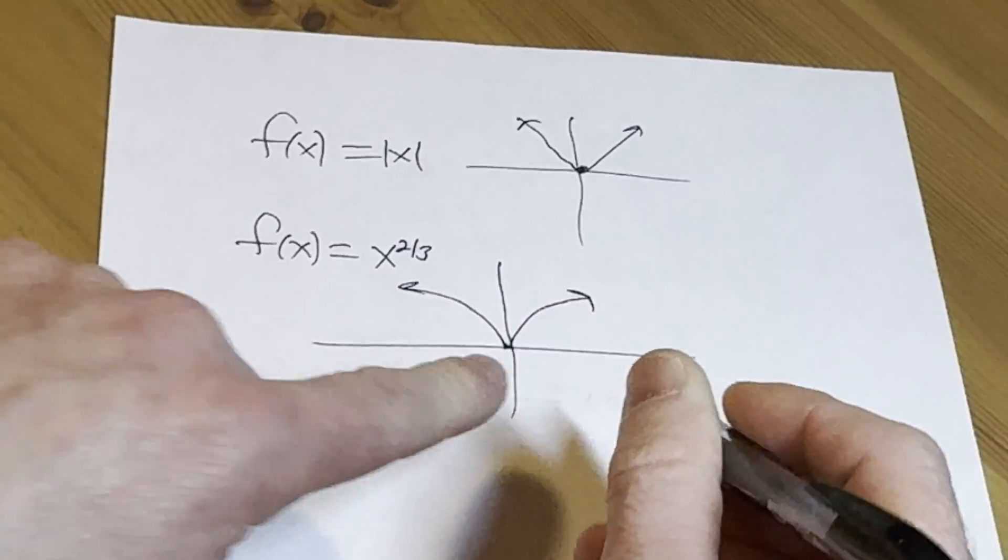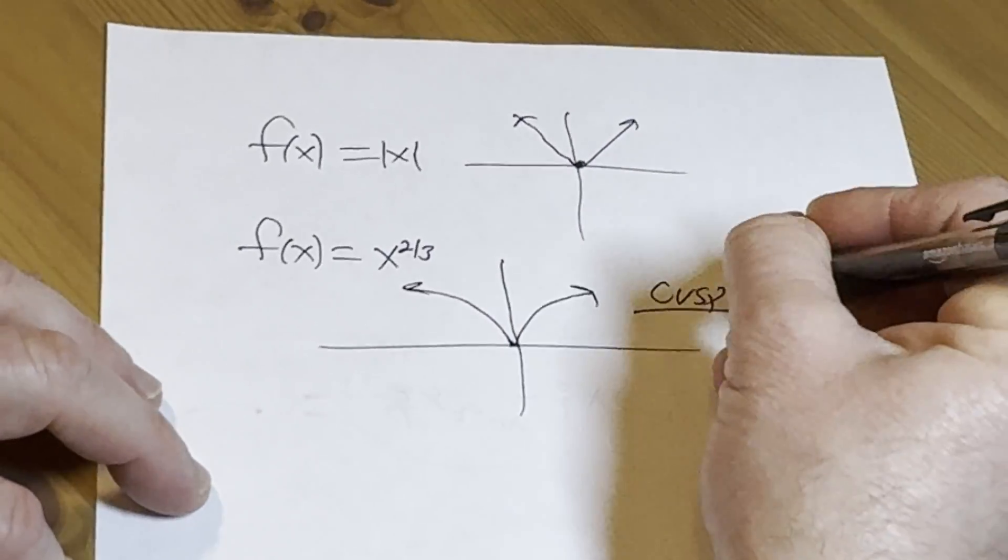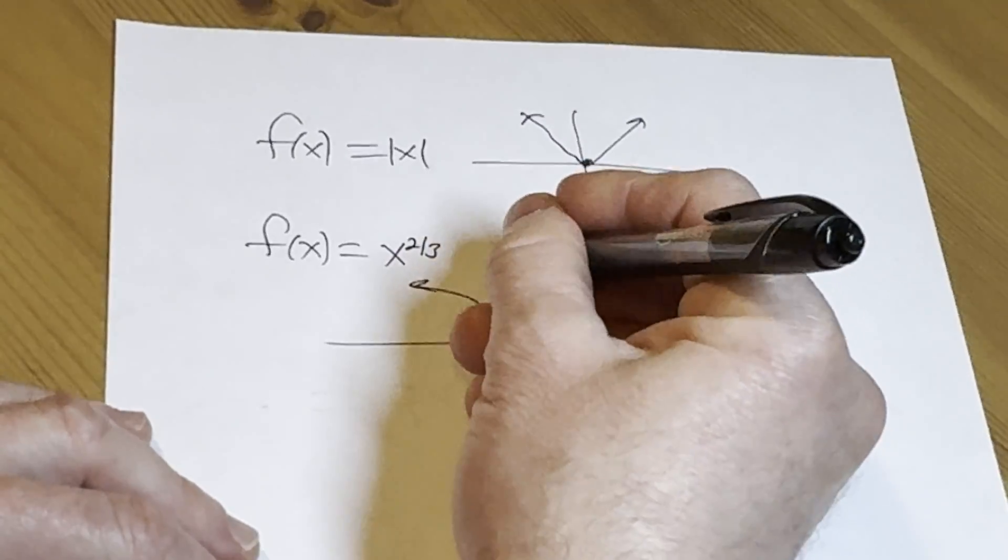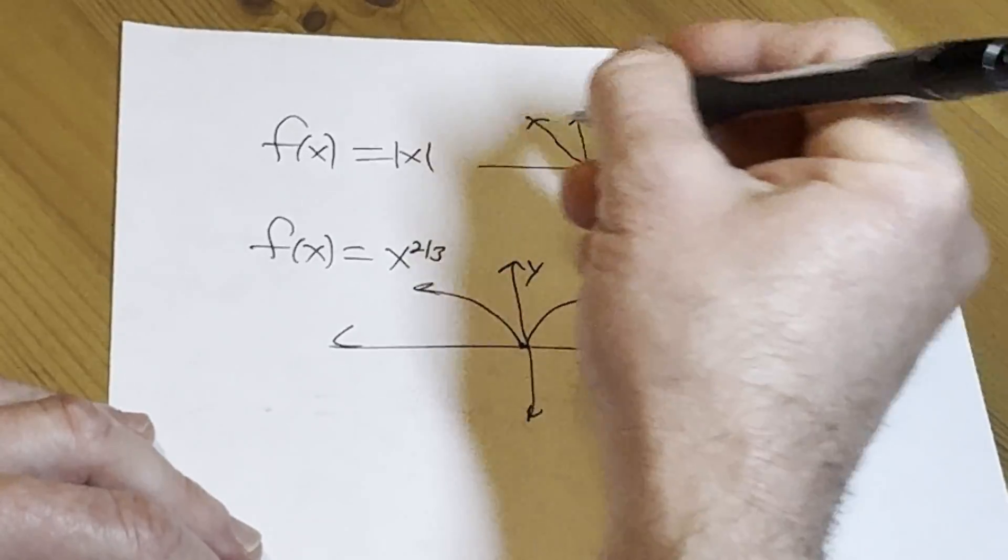That little thing there. That little, it's called a cusp. Okay, it's called a cusp. And so it fails to be differentiable at the cusp. At the cusp.